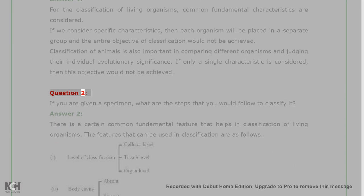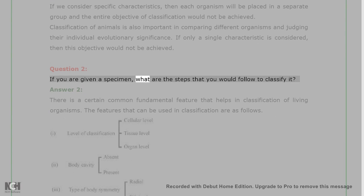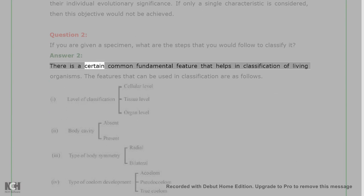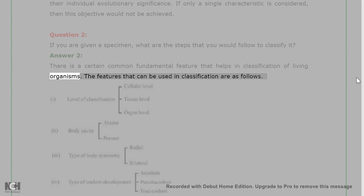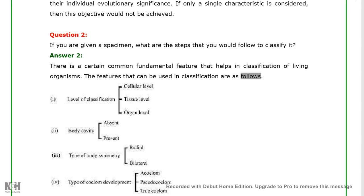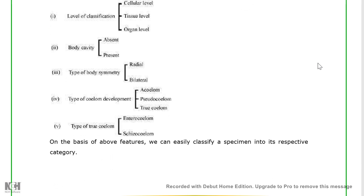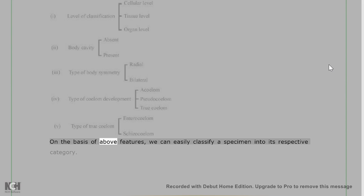Question 2: If you are given a specimen, what are the steps that you would follow to classify it? Answer 2: There are certain common fundamental features that help in the classification of living organisms. On the basis of these features, we can easily classify a specimen into its respective category.